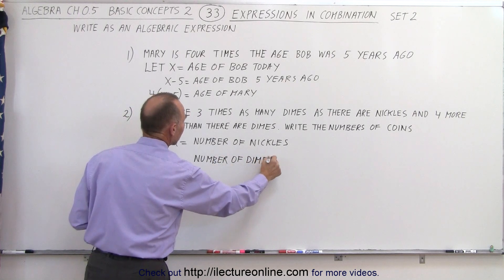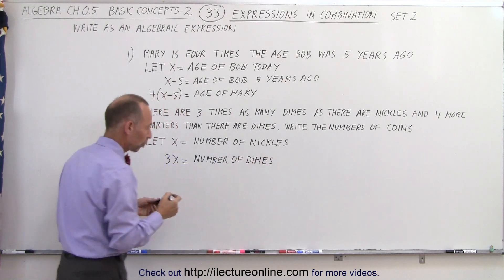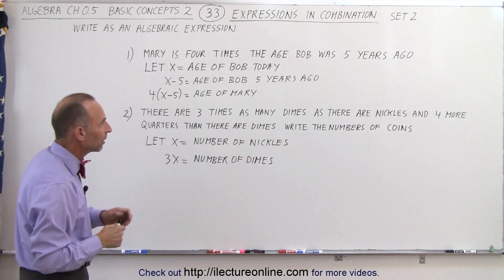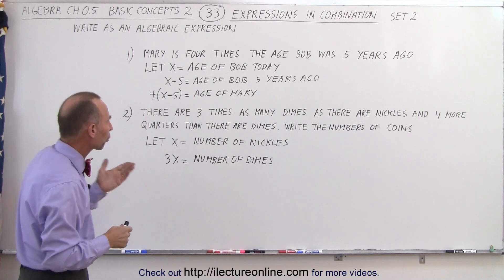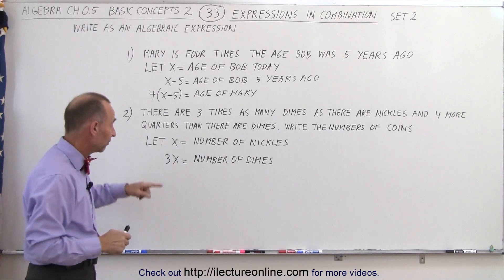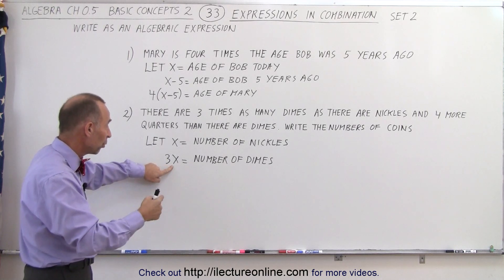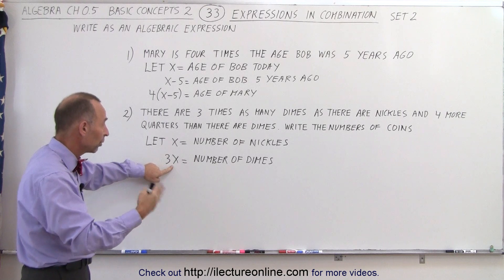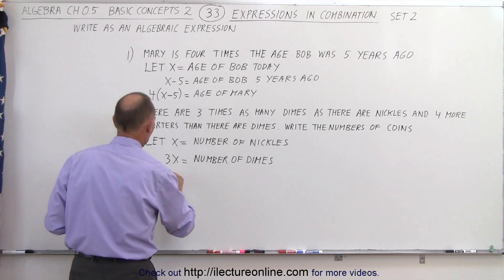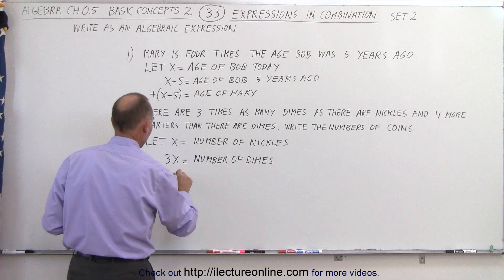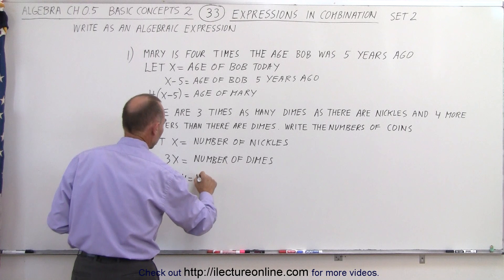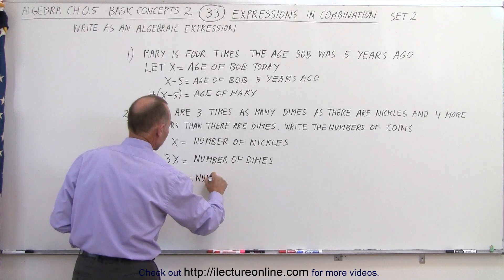And finally, the number of quarters. We're told that there are four more quarters than there are dimes. If 3x is the number of dimes, then 3x plus four gives us the number of quarters.